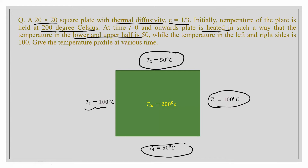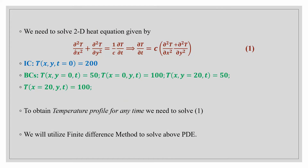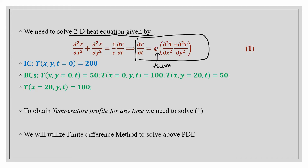The temperature on the right and left-hand side is 100 degrees Celsius. We need to find the temperature profiles at various times. To solve this problem we need to solve the 2D heat equation, where c is the thermal diffusivity. In the question, the thermal diffusivity is given as 1/3. We are also given the initial condition: at t=0 the temperature is 200 degrees Celsius.